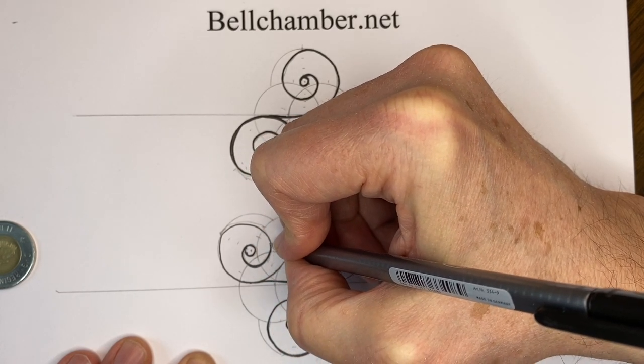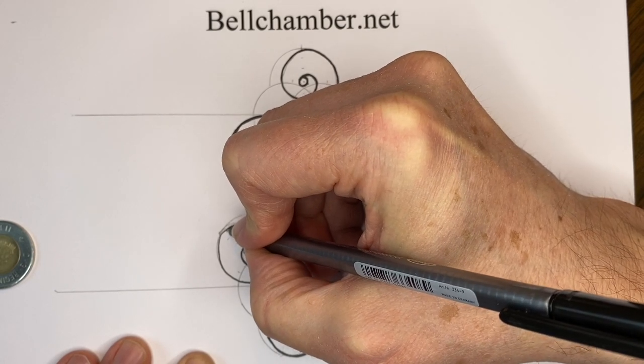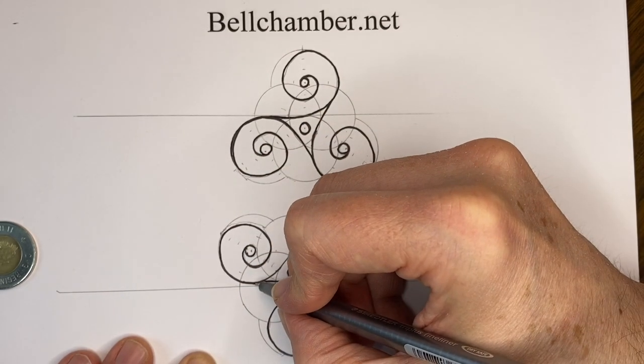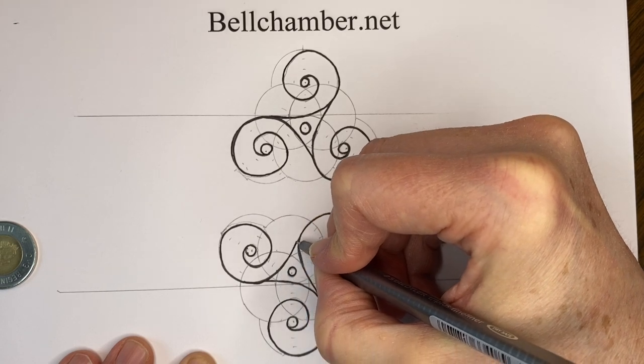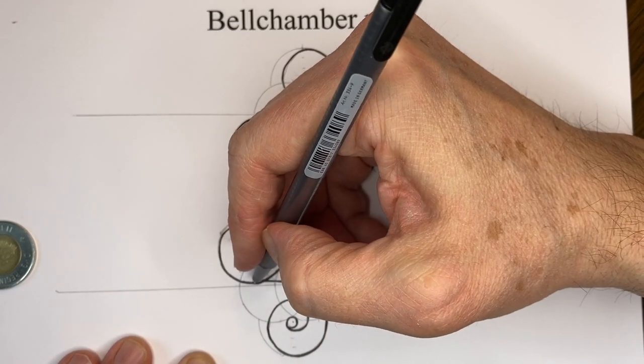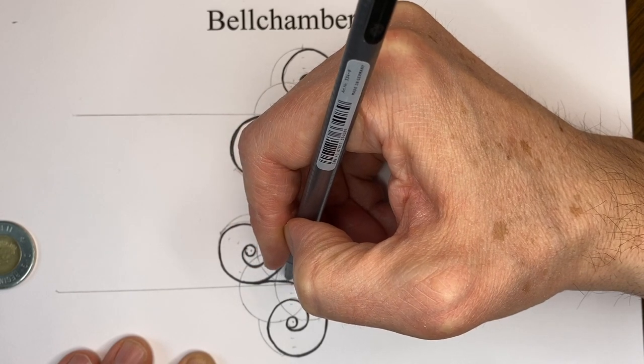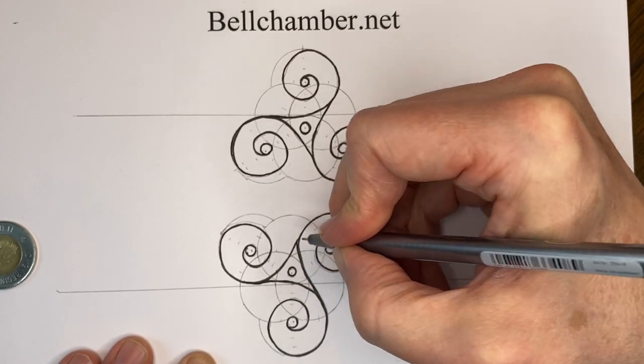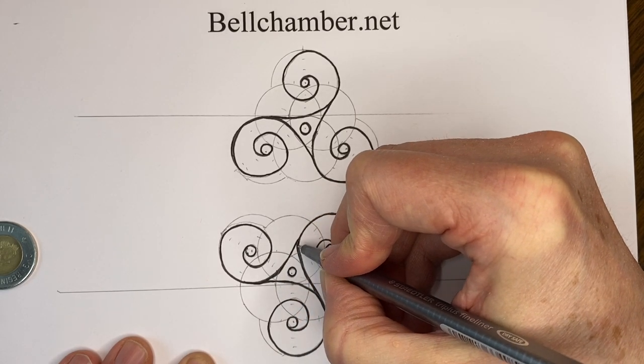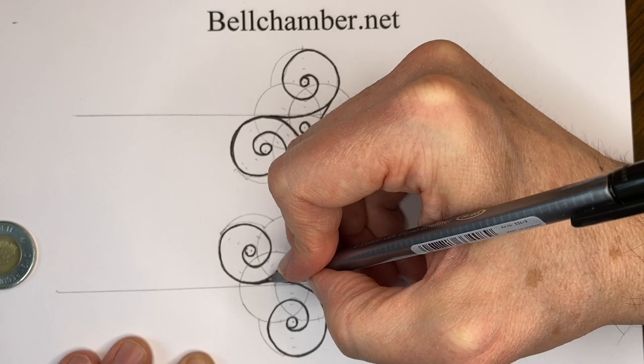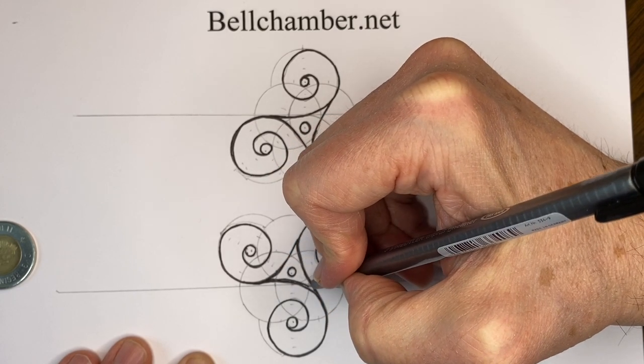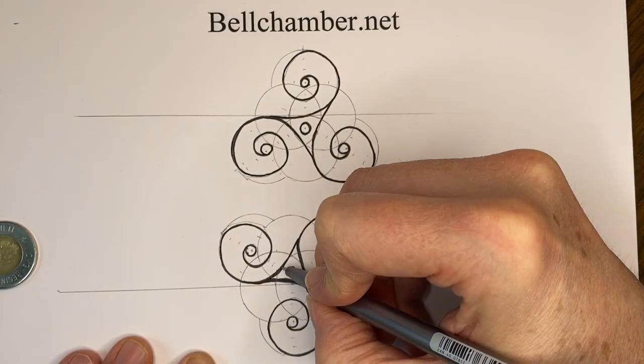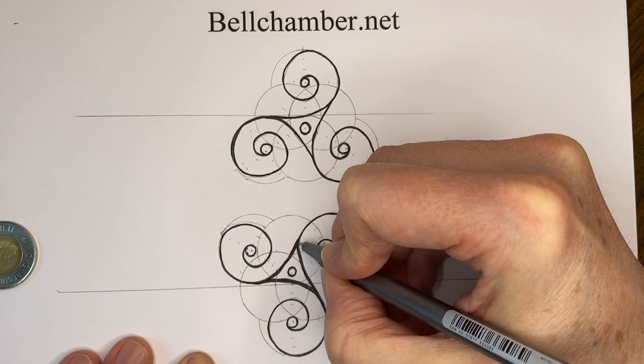So again, the number three or the Triskel to the ancient Gauls or the Celts was definitely a significant number. A lot of modern theorists say that it represents eternity, and it's probably because it's a never-ending cycle of the Sun and the Moon, the two celestial objects that mankind is depending on for knowing when to plant and when to harvest, as well as having a good season.